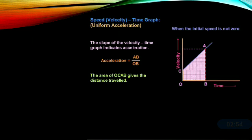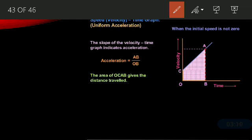Next we have the velocity-time graph for uniform acceleration where the initial speed is not zero. The slope of the velocity-time graph indicates acceleration: acceleration equals AB upon OB, where AB is velocity and OB is time. The area of OCAB gives the distance travelled. This area is in the form of a trapezium — we can either divide it into a rectangle and a triangle, or apply the formula for the area of a trapezium to calculate the distance travelled.